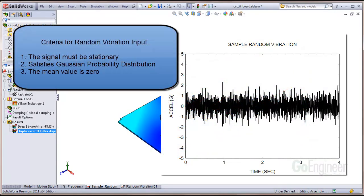There are criteria that should be met to qualify the input as random to run in SOLIDWORKS simulation. These are: the signal must be stationary, it satisfies a Gaussian probability distribution, and the mean value is zero.